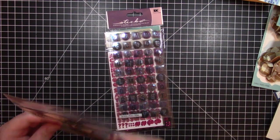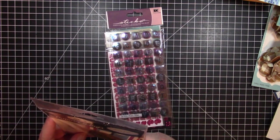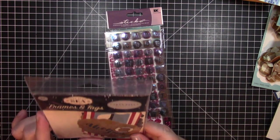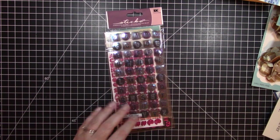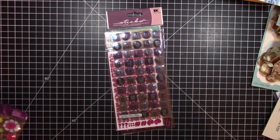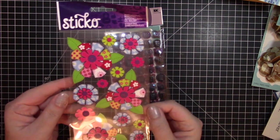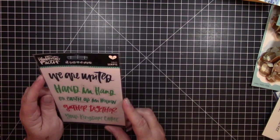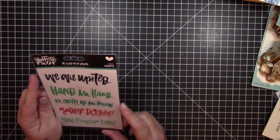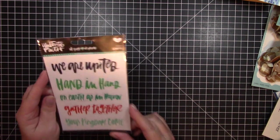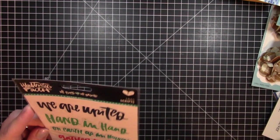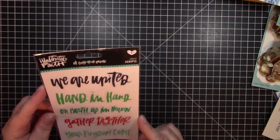More Jolie's Fun Thick Flowers. Then we have, oh this is great. This is Echo Park or Cartabella. Deep Blue Sea. I have some of their nautical paper packs so that will be awesome. Sticko Flowers. These are, we are united hand in hand on earth. As in heaven gather together your kingdom come. So some faith based stickers.